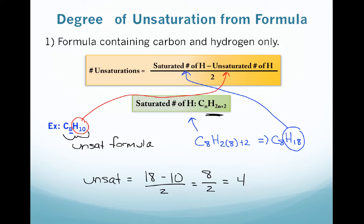Now, this doesn't help us tremendously in pinpointing an exact structure, but it does give us some idea of what might be present — maybe there are 4 double bonds, or maybe 3 double bonds and 1 ring. So it does help limit the possibilities.